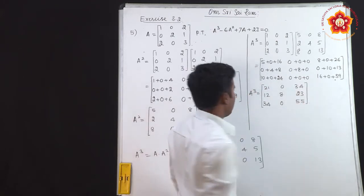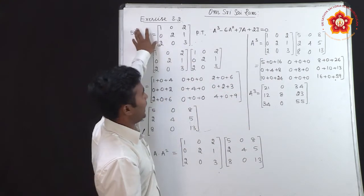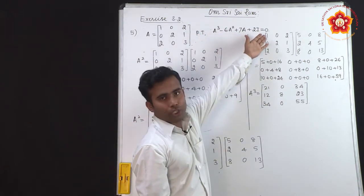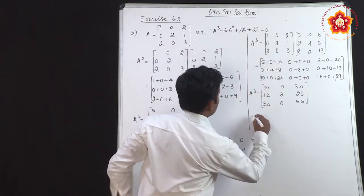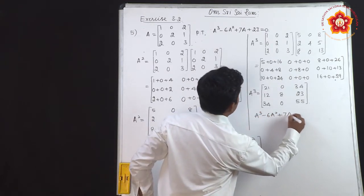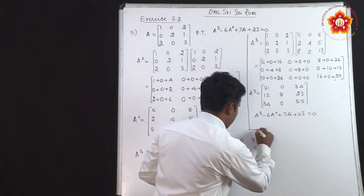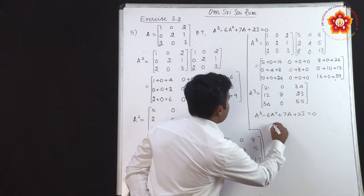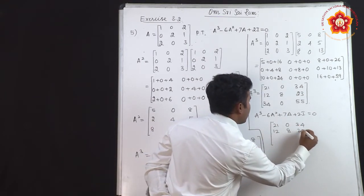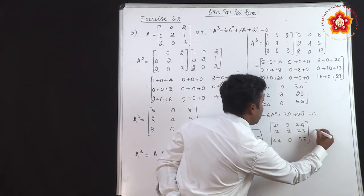Now we have A, A², and A³. We will substitute into the given equation A³ - 6A² + 7A + 2I = 0. A³ is [21, 0, 34; 12, 8, 23; 34, 0, 55], minus 6 times A².